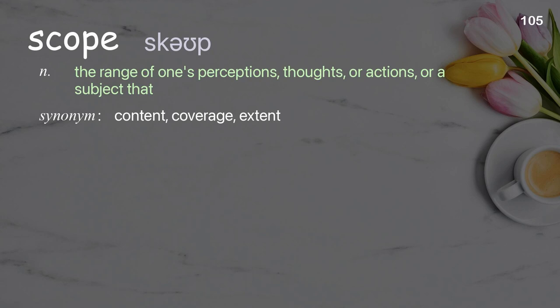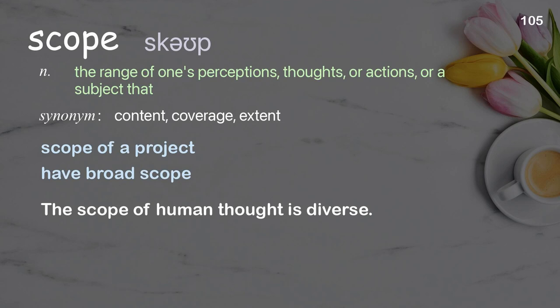Scope. The range of one's perceptions, thoughts, or actions, or a subject that one covers. Examples: scope of a project, have broad scope. The scope of human thought is diverse.